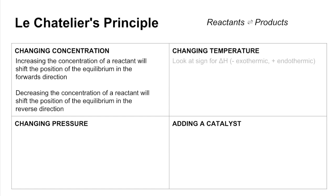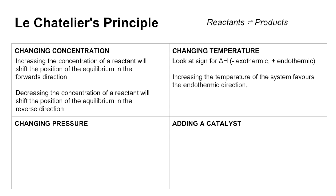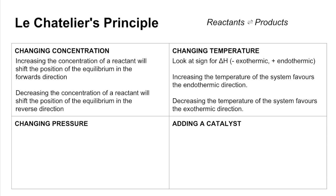Change in temperature now. The first thing you need to do is look at the sign for the enthalpy change. If it's negative, that means the forward reaction is exothermic. If it's positive, it means the forward reaction is endothermic. Increasing the temperature of the system favours the endothermic direction, so as long as you know which direction is endothermic, you'll know which way the equilibrium is going to shift. Decreasing the temperature favours the exothermic direction.